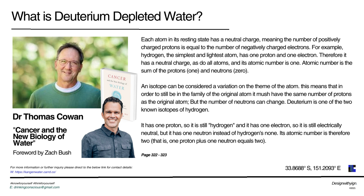'An isotope can be considered a variation on the theme of the atom. In order to still be in the family of the original atom, it must have the same number of protons but the number of neutrons can change. Deuterium is one of the known isotopes of hydrogen. Deuterium has one proton, so it is still hydrogen, and one electron, so it is still electrically neutral, but it has one neutron instead of hydrogen's none. Its atomic number is therefore two — one proton plus one neutron equals two.'